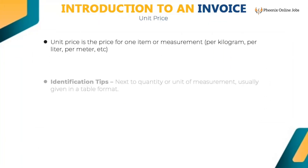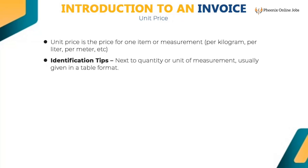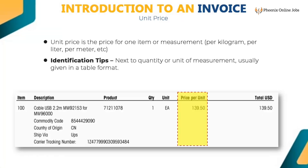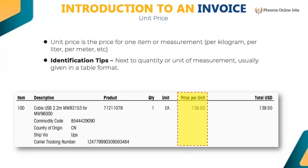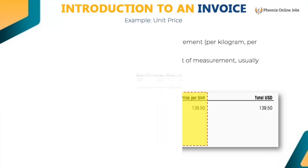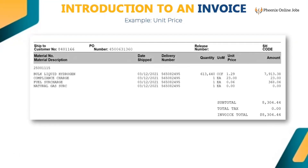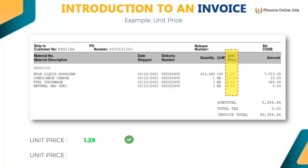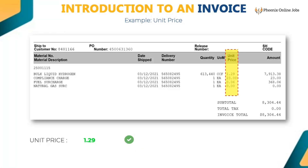Unit price is the price for one item or measurement — per kilogram, per liter, per meter, etc. It comes next to quantity or unit of measurement in table format. Key 1.29 for the first line unit price, and key other unit price values as per the image shown in the snippet. Do not key the word 'price' or 'unit price.' If those words are already populated, then remove them.